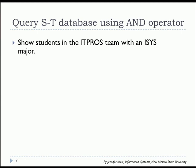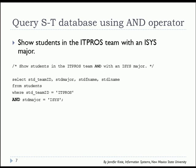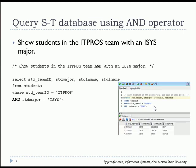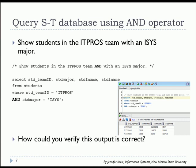Let's look at an example. Let's show students in the IT pros team that also have an information systems major, so the operator is AND. Our statement selects the columns we want from the students table where student team ID equals 'IT pros' and student major is equal to 'ISYS', which is the abbreviation for that major. We see the output showing three people. You might ask how you can verify if this output is correct, so let's switch over to SQL Plus.